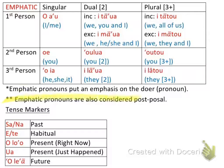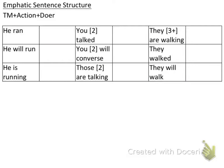Emphatic pronouns are also considered postposal. What that means is you have a verb, and then after that verb comes the pronoun. So when I use emphatic sentence structures, I use a verb and then what goes after the verb is my pronoun. The emphatic sentence structure is: the tense marker goes first, then my action or verb, and then my doer. This isn't a real full sentence — it's a beginning step I created to help you learn the entire sentence structure.